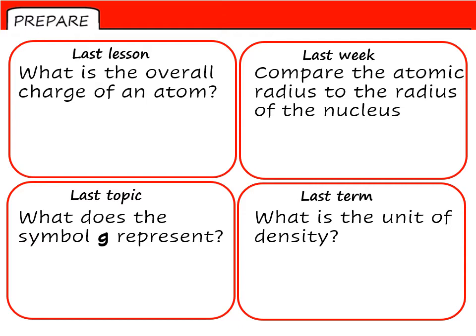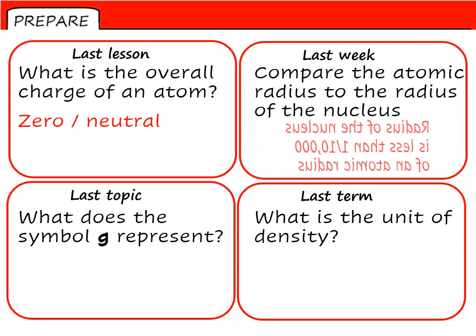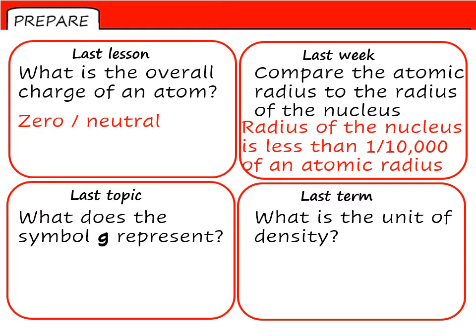So looking at those answers, overall atoms have zero charge. They are neutral because there is an equal number of positive protons and negative electrons. Compared with the nucleus, the radius of the nucleus is less than one ten thousandth of an atomic radius. G represents gravitational field strength, which is measured in newtons per kilogram. And the unit of density is kilograms per meter cubed.